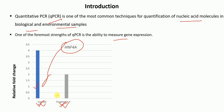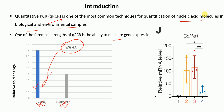Another example of gene expression measurement is the measurement of a particular gene expressed in different tissues. As shown in this graph, the gene measured is COL1A1, and its expression level differs among different tissues, indicated by numbers 1, 2, 3, and 4. In tissue 1, the expression is the least, whereas in tissues 2 and 3 the expression is much higher. Tissue 4 has expression higher than tissue 1 but lower than tissues 2 and 3. Hence, QPCR can be used to compare expression of a gene between different tissues.